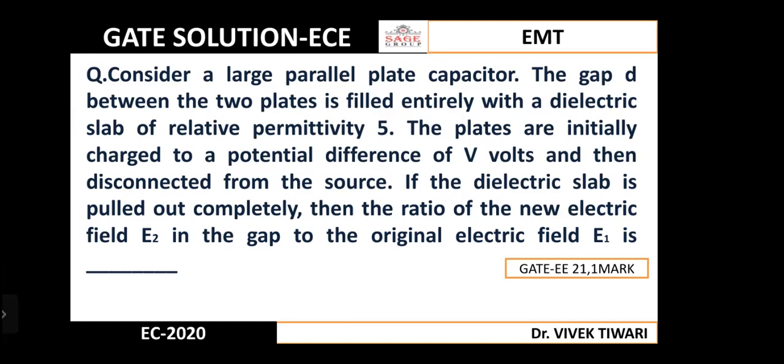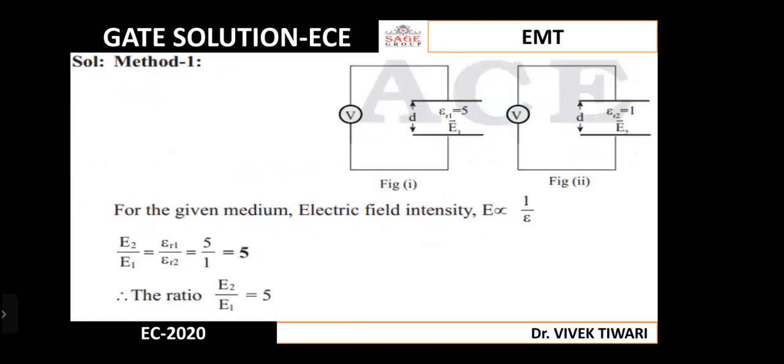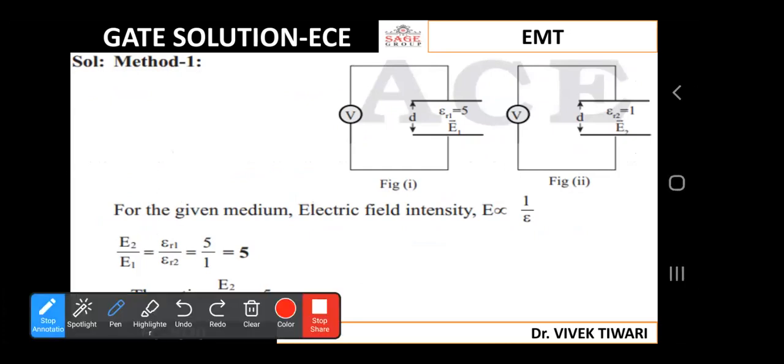First of all, we try to understand the question. We have given electric permittivity 5 and electric field inside the capacitor with a potential V applied. The question says that the second time we have pulled out all the dielectric material. The potential is the same in both cases.